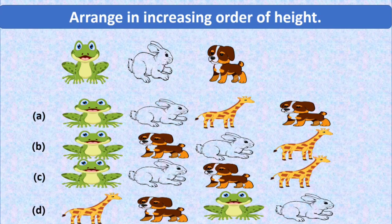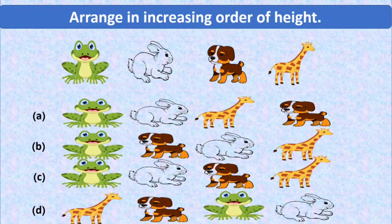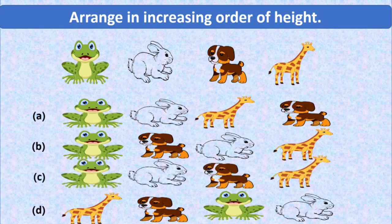Then the tallest one is the giraffe. Yes, giraffe is the tallest animal here. So this same order is visible in option C. Yes, option C is the correct option showing the increasing order of their heights, so we will put a tick mark at option C.